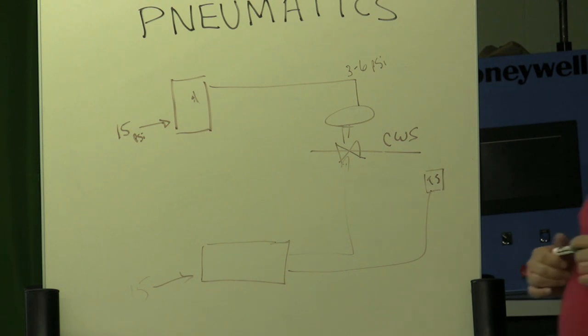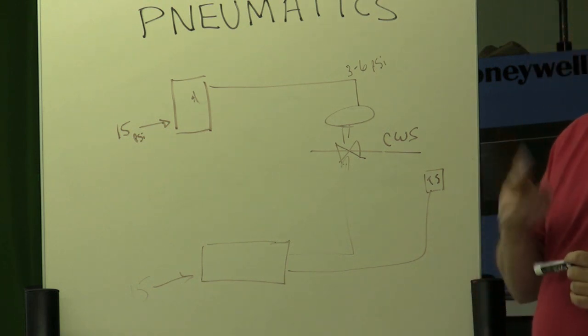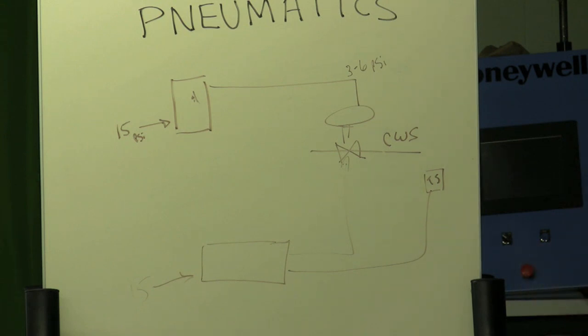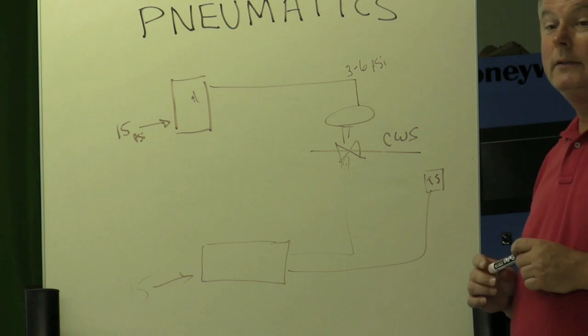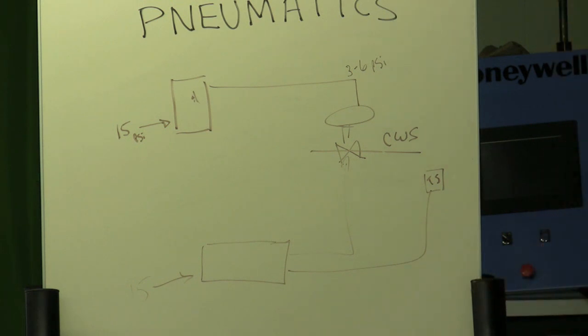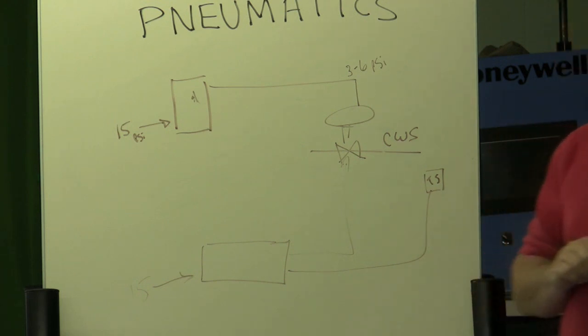Transmitters kind of work the same way. There are two-wire transmitters, and there are four-wire devices. A two-wire transmitter is what you're going to see most of the time. Any of those pressure transmitters that we have back there on the back row are two-wire devices.